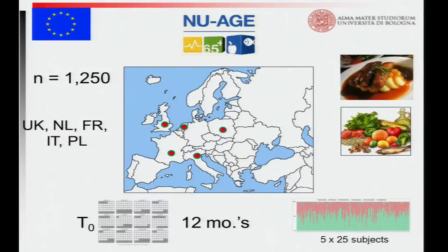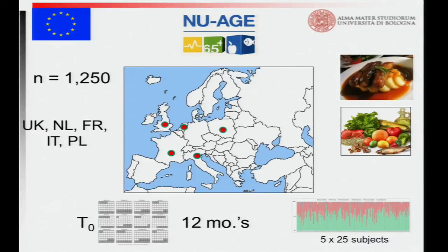This is what we're doing as part of the NU-AGE Consortium, which consists of about 30 different partners across Europe and beyond. We're going to look at 1,250 individuals in five different countries: the UK, the Netherlands, France, Italy, and Poland. Half will be given a healthy Mediterranean-style diet, while half will continue their regular diet for 12 months. We'll have their microbiota information from before and after the diet, measuring health indices throughout, as well as epigenetic and metabolomic datasets. It's going to be a very interesting long-term intervention.